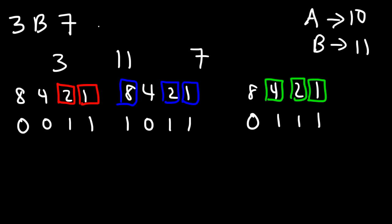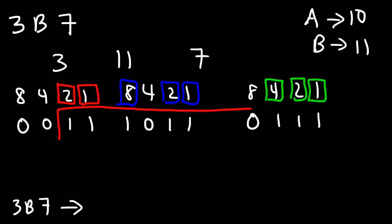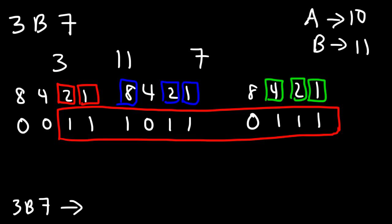Thus, 3B7 is equal to, combining the three 4-bit groups — we can start from the first significant bit and don't need the leading 0 — so 3B7 in the hexadecimal system is 1 1 1 0 1 1 0 1 1 1 as a binary number.